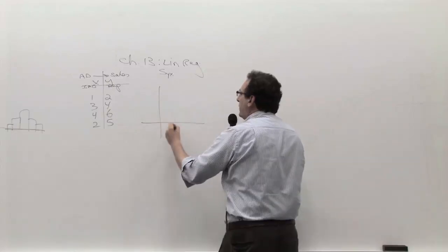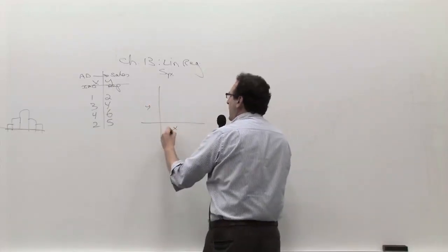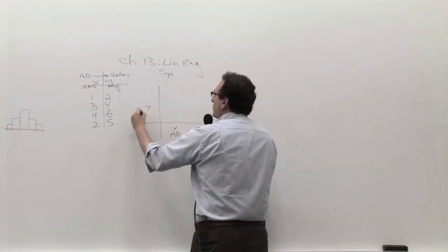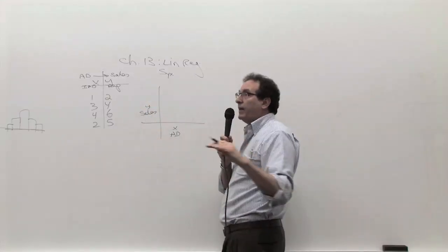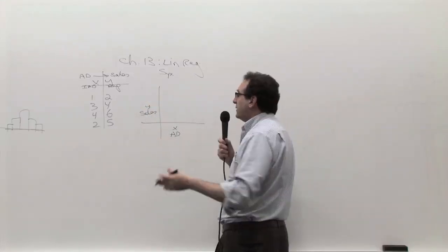The first thing we did was to graph the data. The X was here, or the advertising was here. The basic idea is that advertising has an impact on sales, in fact a linear impact. You double the advertising, you're doubling the sales. It's linear proportional.